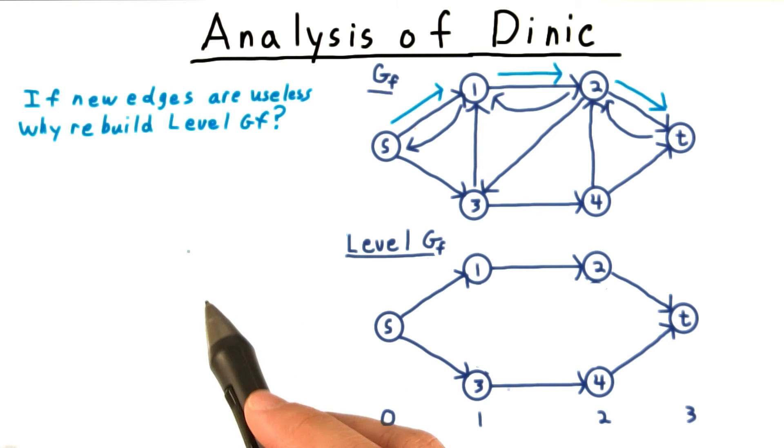Well, if the new edges are useless, why rebuild the level graph of the residual graph when the old one will serve just as well? We can just update the residual capacity.